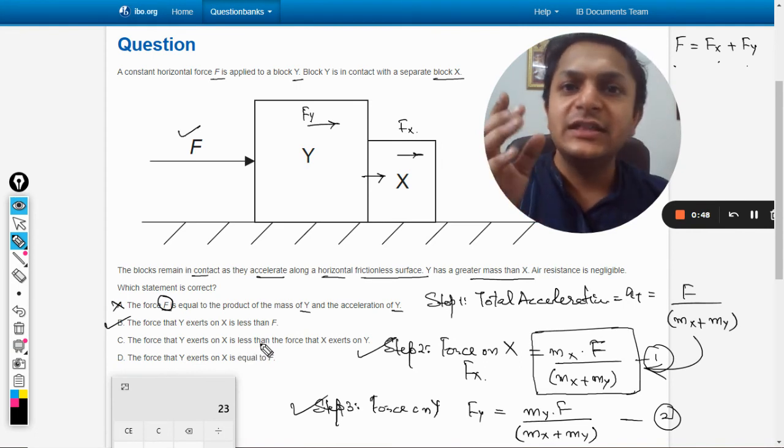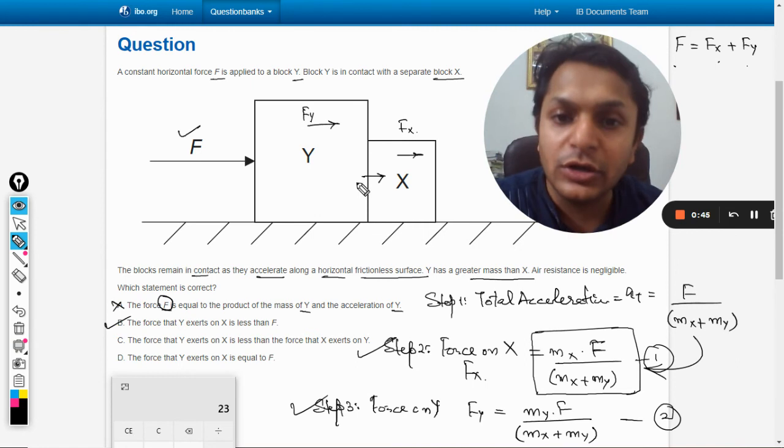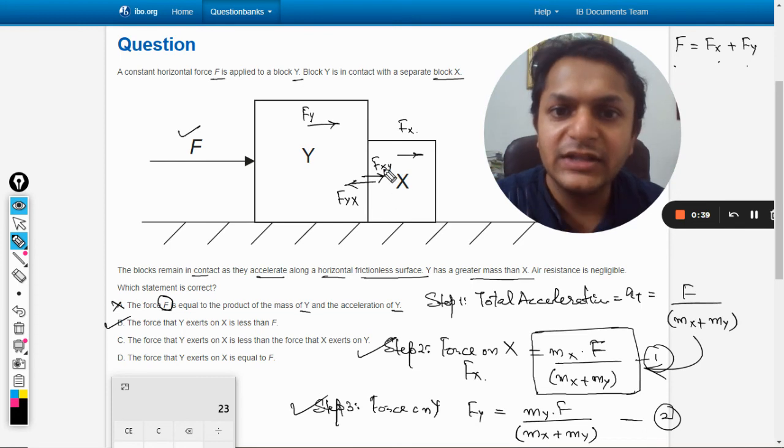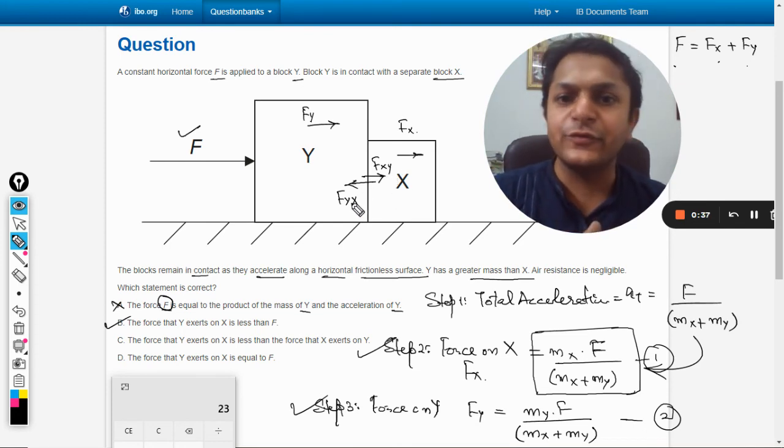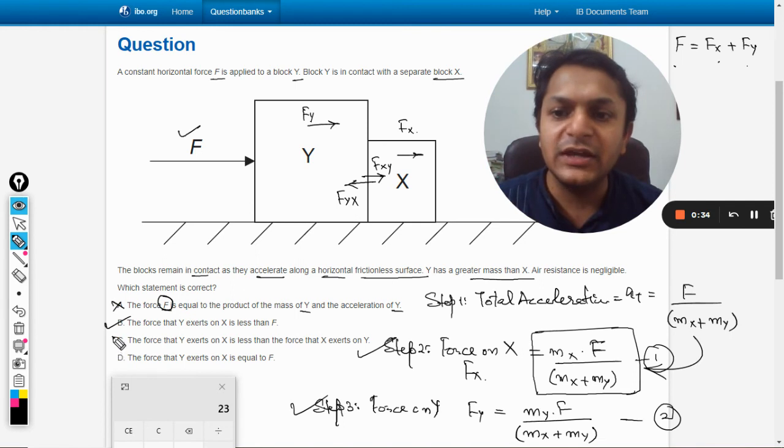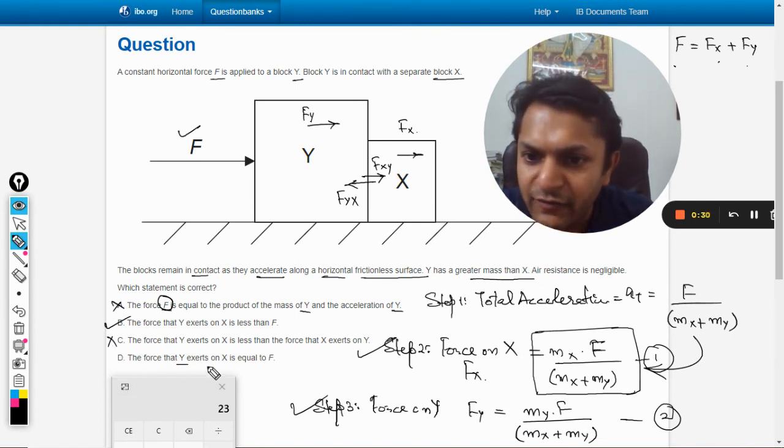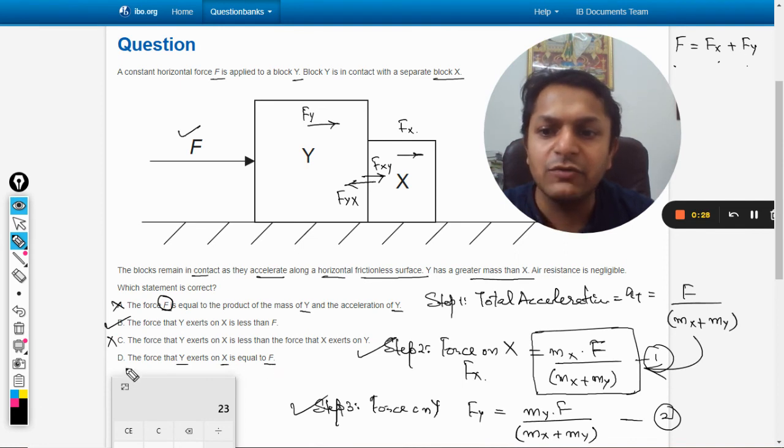Absolutely not, because these two forces are going to be action-reaction pair. This is force on X because of Y, this is force on Y because of X. So they will always be equal to each other magnitude wise. The force that Y exerts on X is equal to F. Even this is not right.